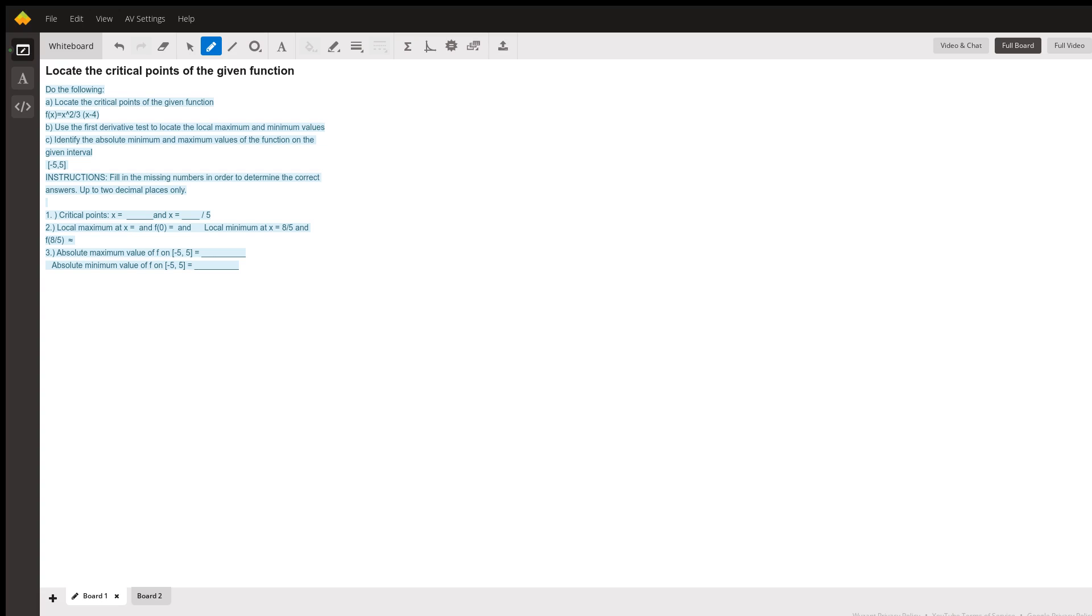We can show that the critical numbers are zero and 1.6 or eight-fifths, and the corresponding function values for those points are inside this interval, so this is the relative minimum, or the absolute minimum right here, and this is the absolute maximum. They occur at the endpoints of that interval.